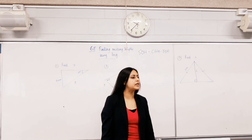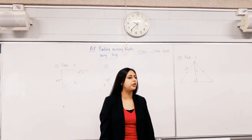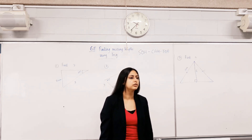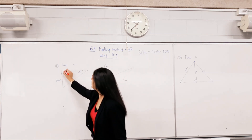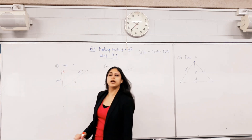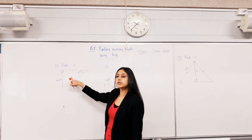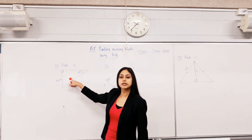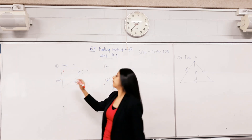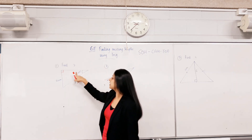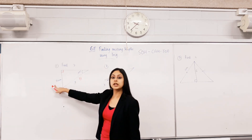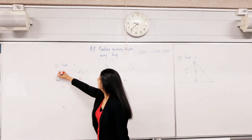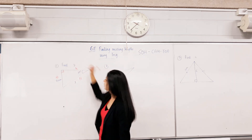Finding missing lengths. What's the first step? Labeling our triangle. Screens down. This is the 90 degree angle, so the side opposite to it is the hypotenuse. Now, this is the angle we've been given, so the side opposite to it is opposite.